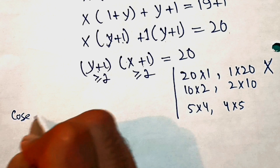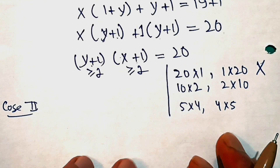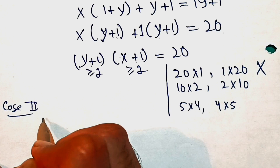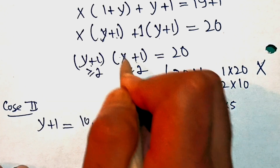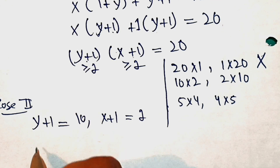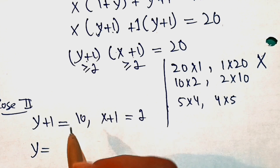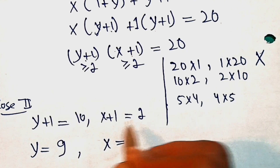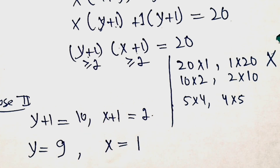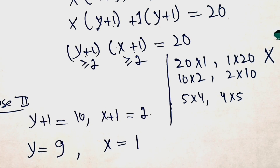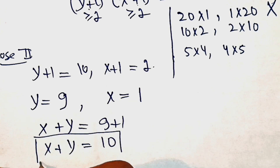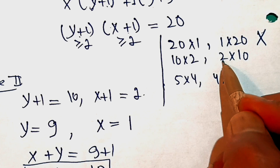Case 2: take one factor as 10 and the other as 2. So y plus 1 equals 10 and x plus 1 equals 2. That means y equals 9 and x equals 1. Therefore x plus y is equal to 10.